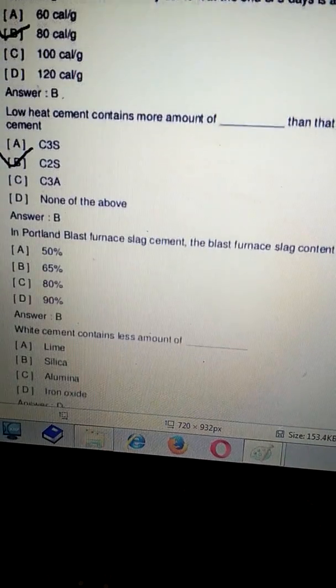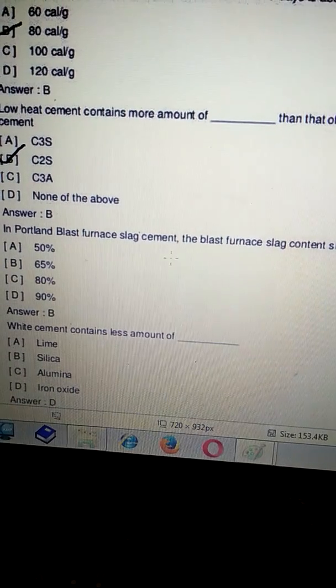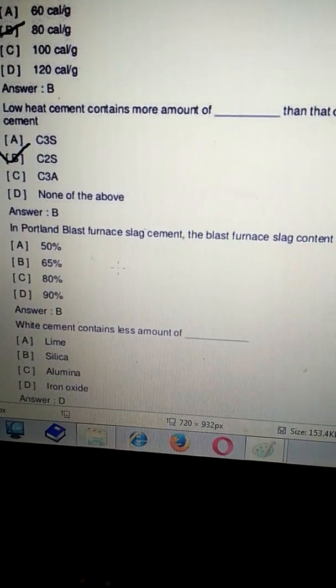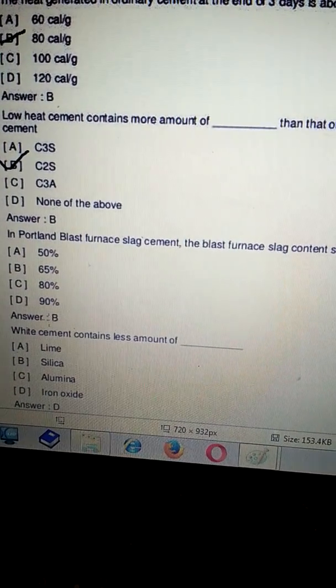Next question: in Portland blast furnace slag cement, the blast furnace slag cement shall not exceed 50 percent, 65 percent, 80 percent, or 90 percent? The correct answer of this question will be B, 65 percent.